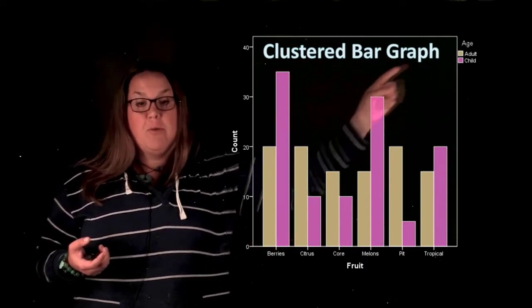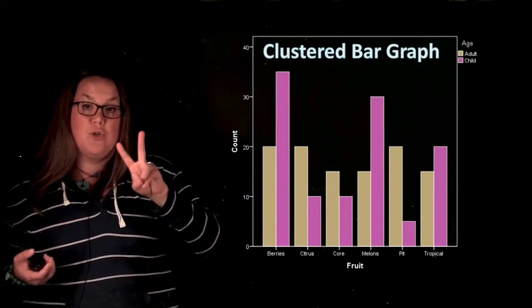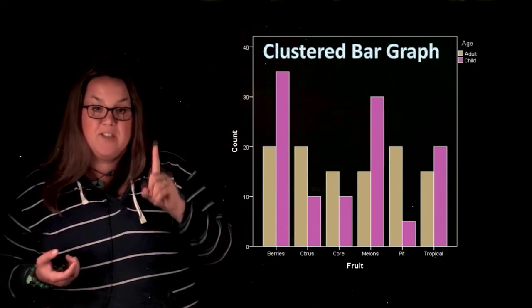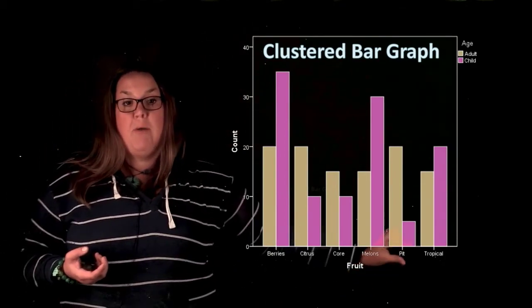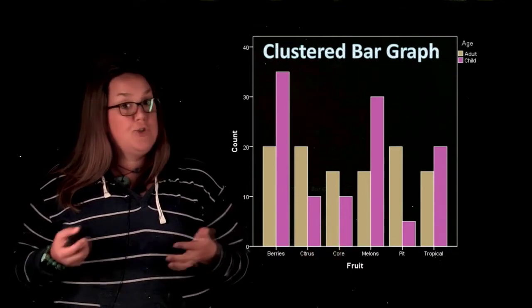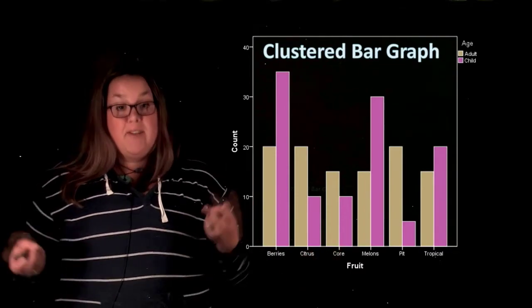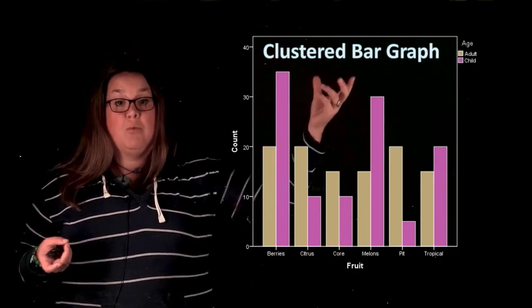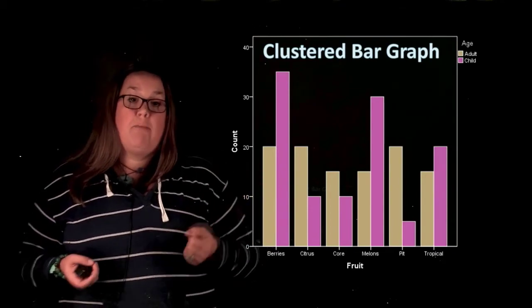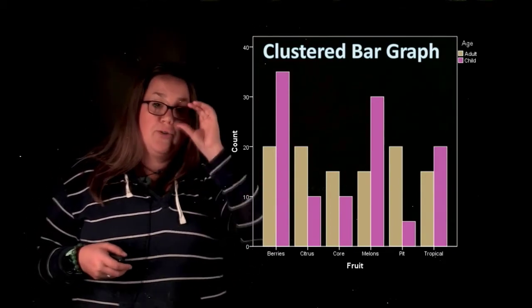But ultimately with a clustered bar graph, you can only have two categorical variables. The first categorical variable would be represented on the x-axis just like a regular bar graph. But the second categorical variable comes in with the clustering and that can be represented with different colors or different patterns.